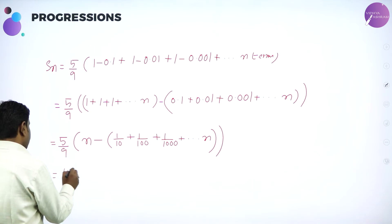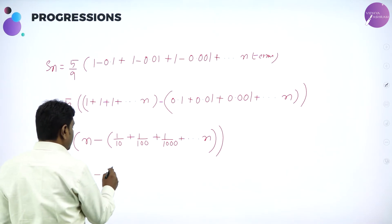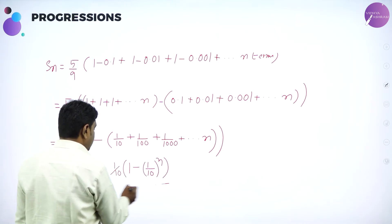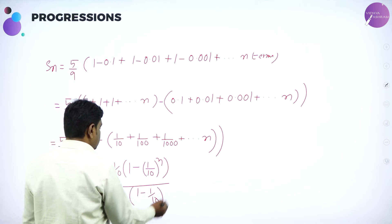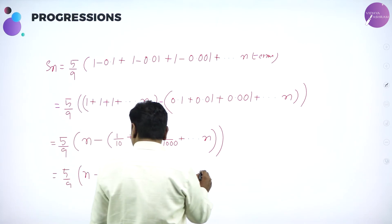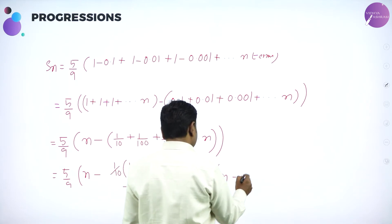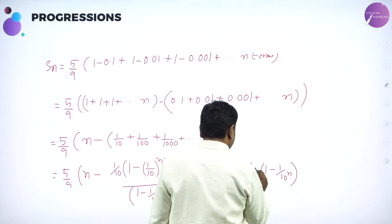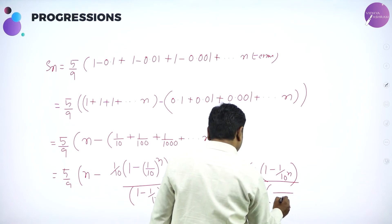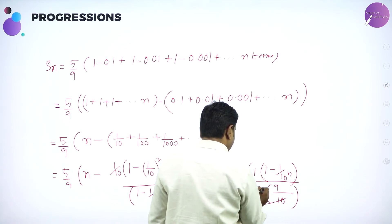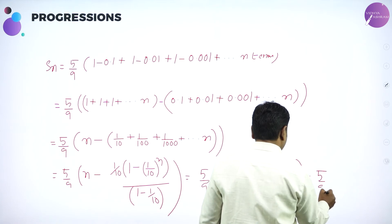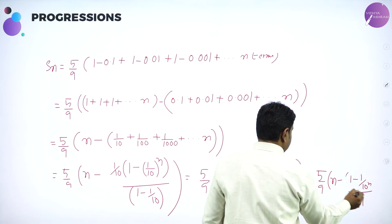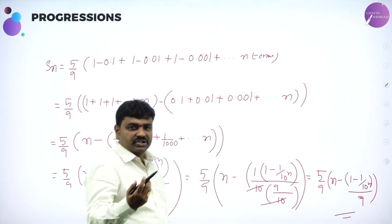So it is 5/9: n minus A × (1 − r^n) / (1 − r), where A = 1/10 and r = 1/10. Simplifying: 1 minus (1/10)^n divided by (1 − 1/10). After simplification, the final answer is 5/9 × [n − (1 − 10^(−n)) / 9]. This is the answer.